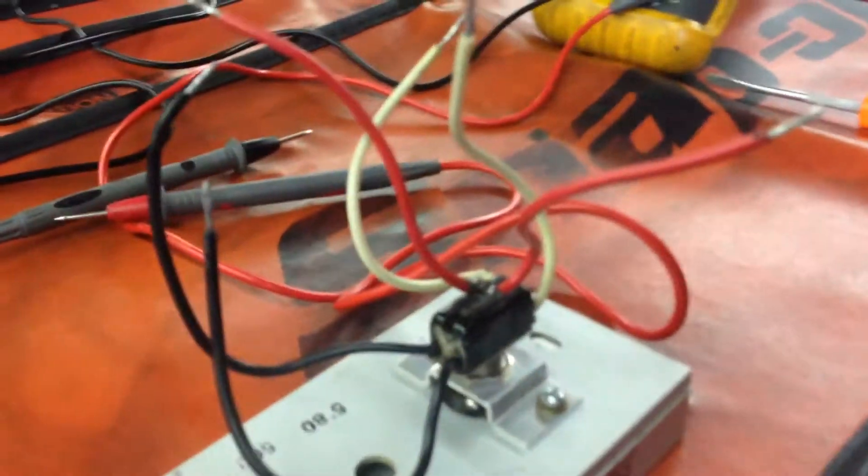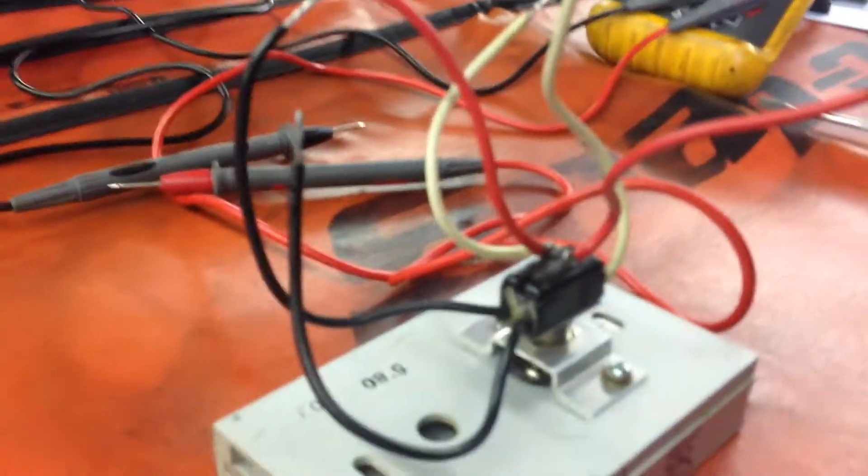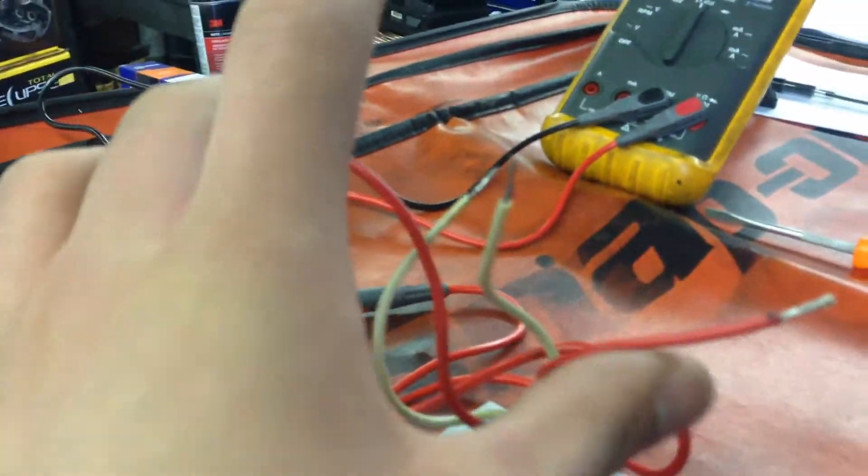We're going to be testing for continuity. As you can see right here, we have six wires. We have two blacks, two reds, and two whites.